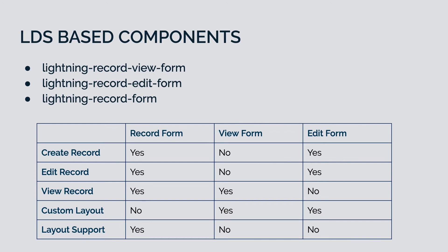If you want to create a record, you can do that using record-form or the edit-form — view-form will not support it. If you want to edit a record, you can also use record-form or edit-form — view-form cannot be used to edit. If you want to view a record, you can use record-form or view-form — edit-form cannot be used to view an existing record. If you want a custom layout in your component, view-form and edit-form support it, whereas record-form will automatically fix the layout from your record page layout. Layout support — supplying all fields from a page layout — is supported in record-form but not in view-form or edit-form.